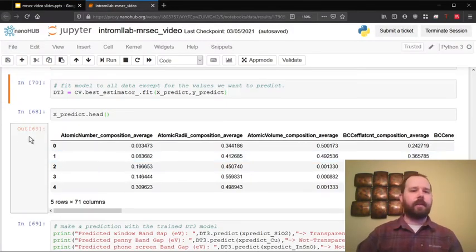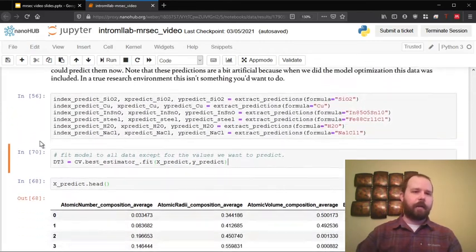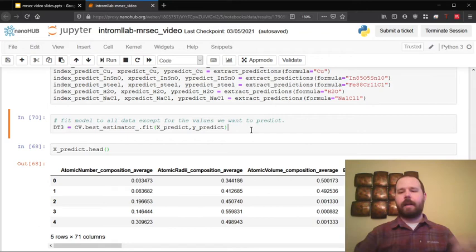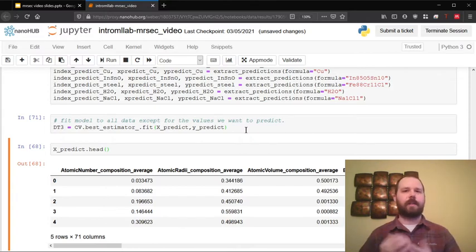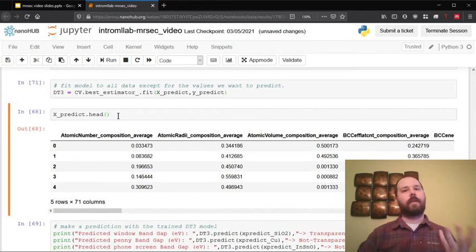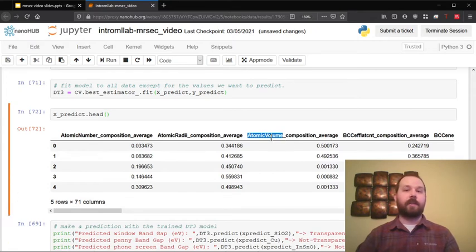So this is all written in Python code and I've made a very simple version of this model and it actually only takes one line of code to fit or train the model. And that's what I did just there. It only took a few seconds because our data set is fairly small. And we can also see an example of what that input information looks like for the model.